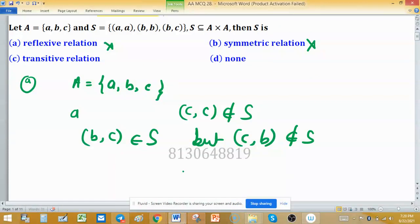For transitive, we need to be careful. Whenever we choose, if I say a is related to b and b is related to c, then we need to check that a must be related to c for a transitive relation. In this relation, three ordered pairs are there, so a is related to itself.